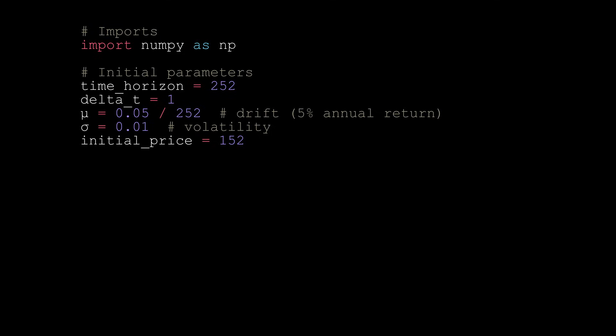The time horizon is the number of time periods we're going to simulate for. We're going to set this value to 252, as there are 252 trading days each year. We are considering daily price movements, so we're going to set the delta_t value to 1.